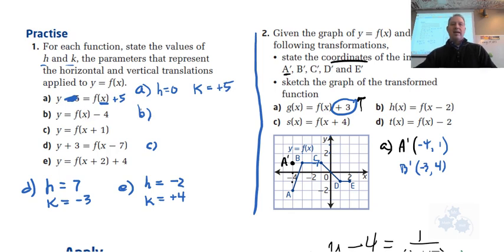B, we again have h is 0, because nothing's happening inside here. And k is negative 4.